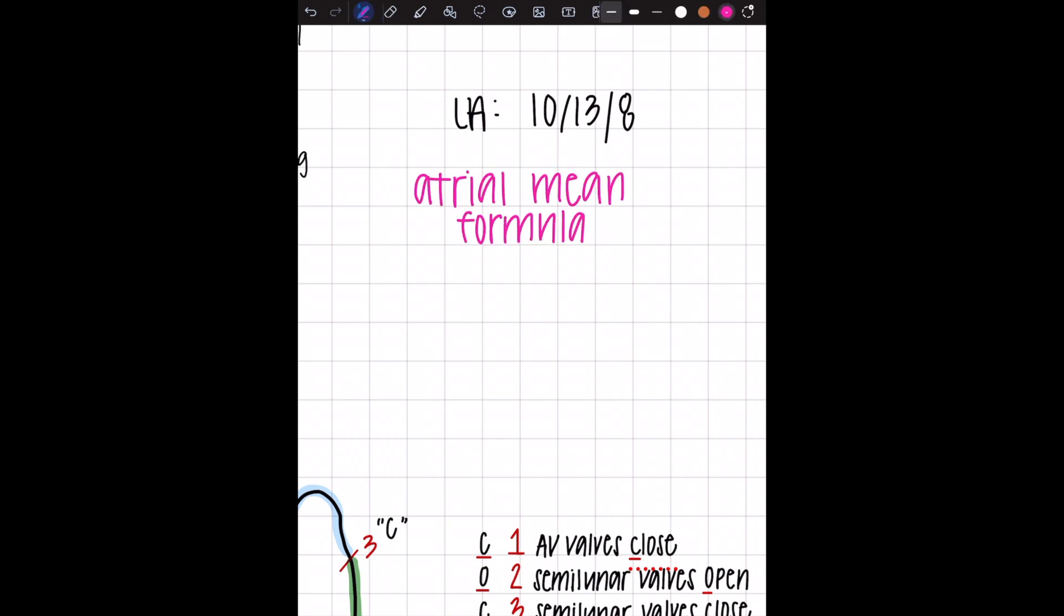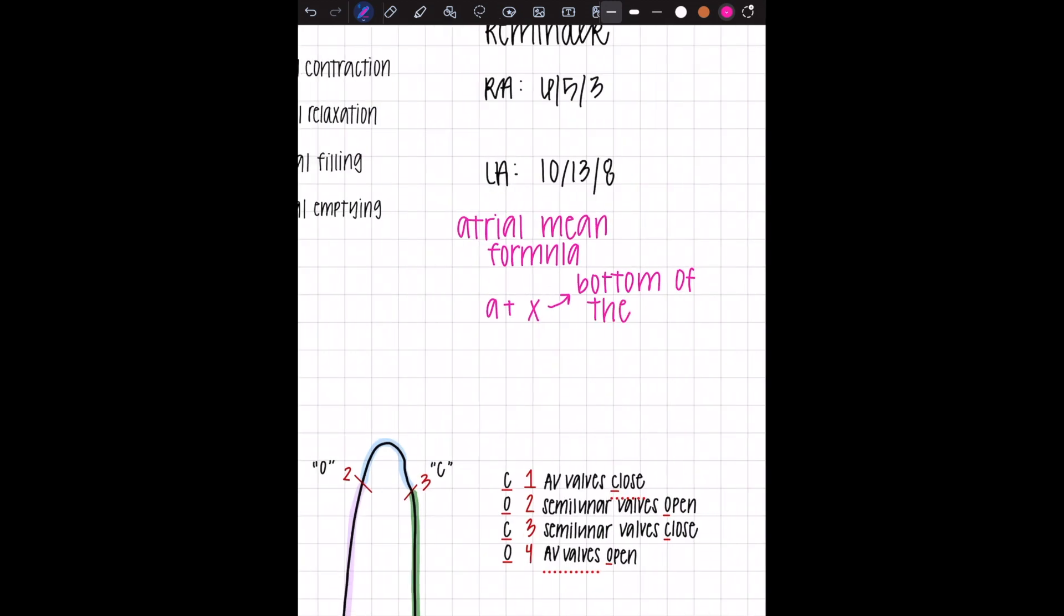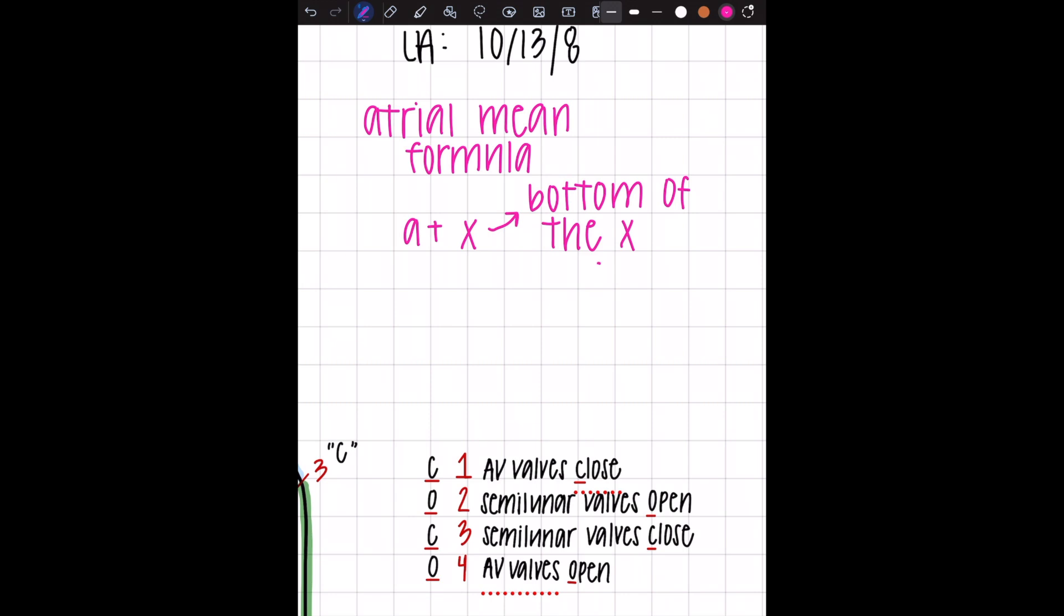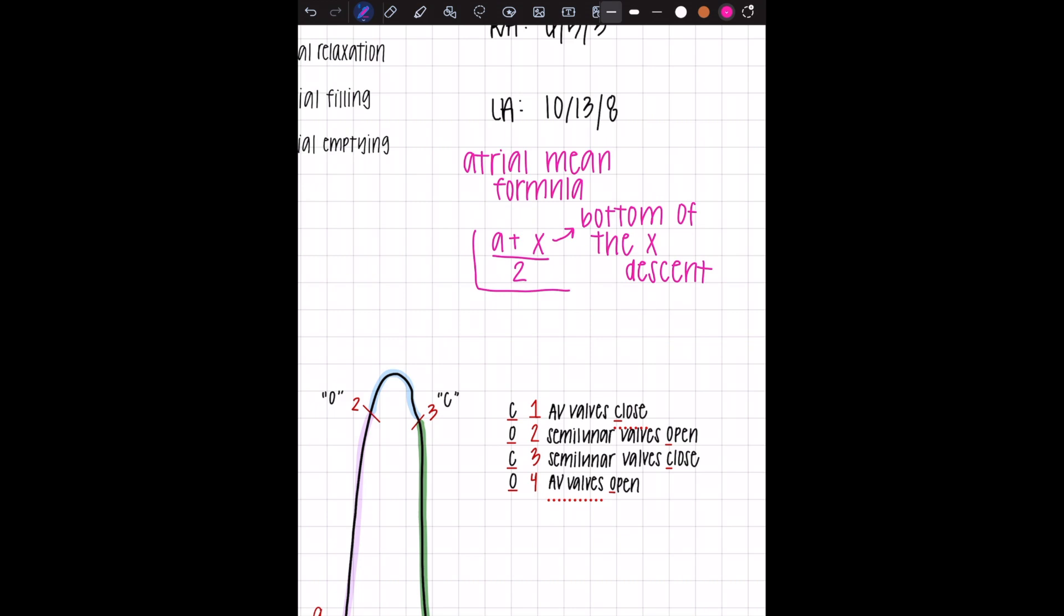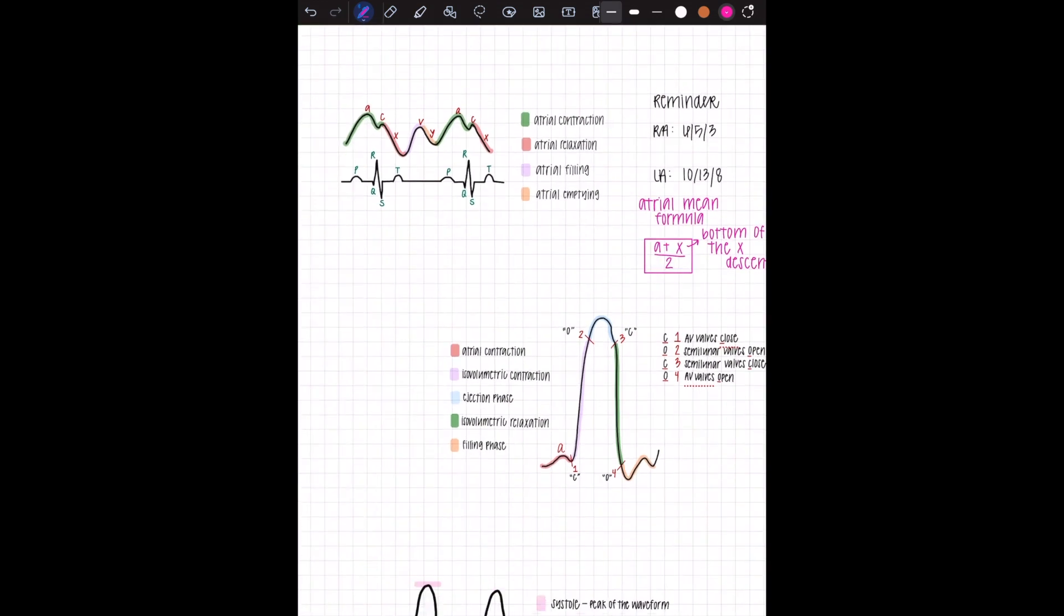We're going to write out the formula, how we got that number eight. This is the atrial mean formula and it's A plus X, X being the bottom of the X wave, which we call the X descent. I'll show you on a real example what that looks like over two, and you're going to use that for both the right atrial mean and the left atrial mean.